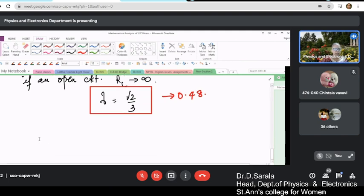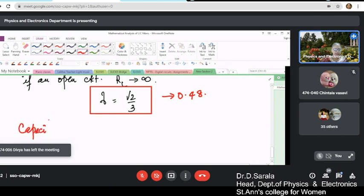So let me continue because we have completed the Fourier sequence today. Let me start with capacitor filter 2.